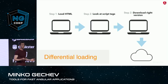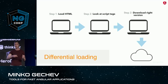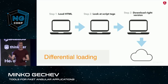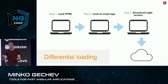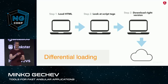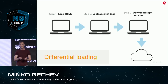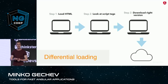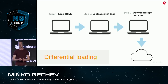Here is how differential loading works. First, the browser sends a request to the server. The server delivers the HTML, where there are two script tags — one for modern browsers and one for legacy browsers. From there, the browser, depending on its supported capabilities, chooses one of these script tags, downloads the associated JavaScript, and right after that executes it.